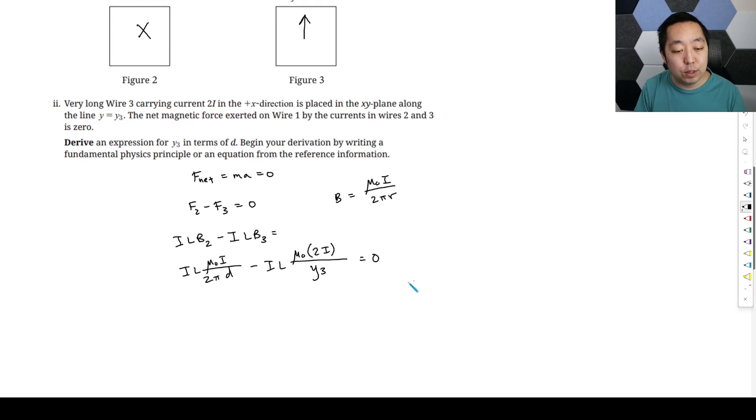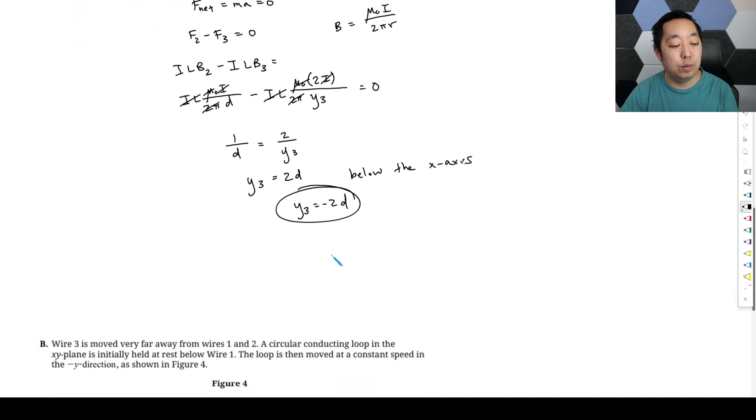You can move them to the other side. You can divide out the ILs, you can divide out the mu, you can divide out one of the I's. Oh sorry, there's a 2 pi here. You can cancel out the 2 pi. So you get 1 over D, and then move this to the other side is 2 over Y3. So Y3 is going to be, cross multiply, 2D. But it's below the x axis, so Y3 is just the distance. So below the x axis, Y3 has to equal negative 2D for the mathematical expression there. A little bit tricky, just making sure you understand the ILB equation.